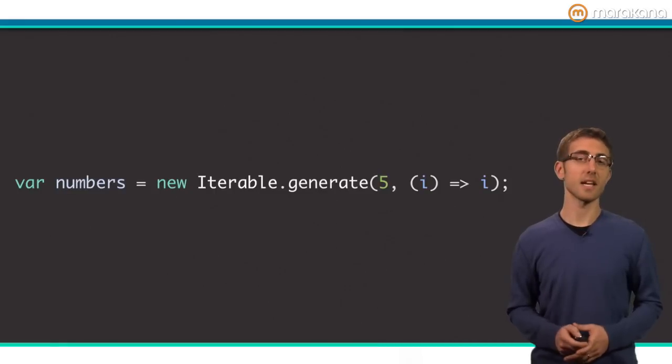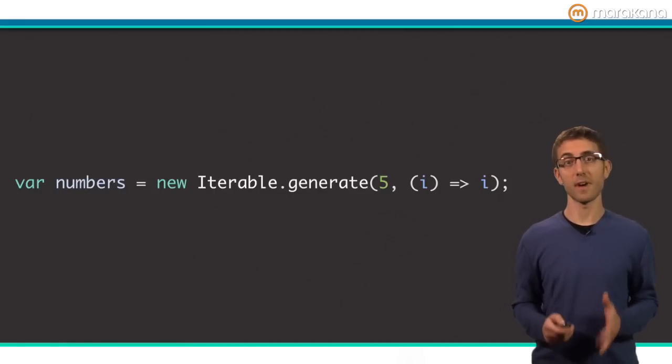Just for illustration, here's an example of generating an iterable series of five numbers, 0 through 4. Most of the time, you'll iterate through actual collection objects, but it's cool to know you can generate a pure iterable object.